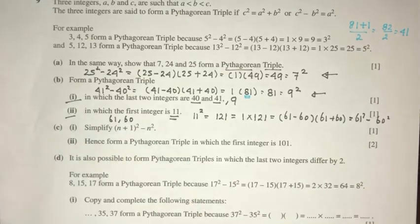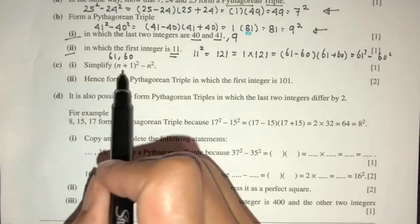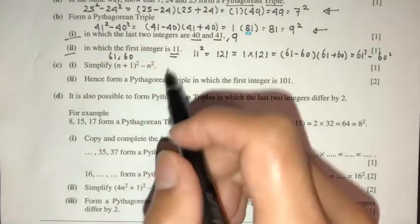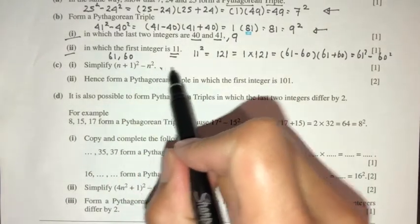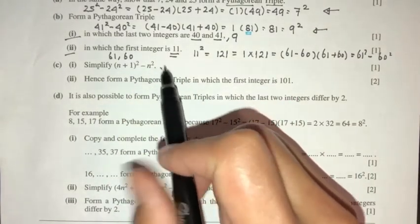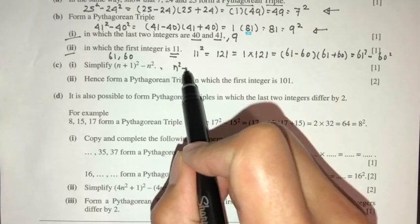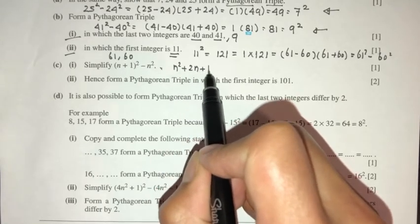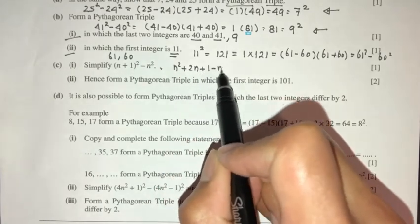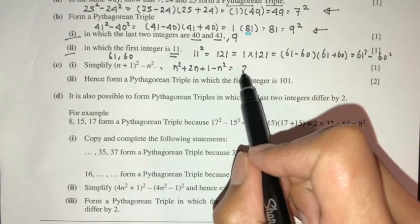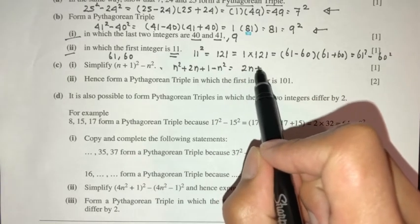That is your answer for part 2: the triple is 11, 60, 61. Now for part C, we have to simplify. Expanding gives n squared plus 2n plus 1 minus n squared, which simplifies to 2n plus 1.